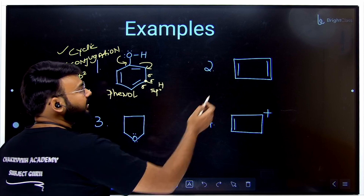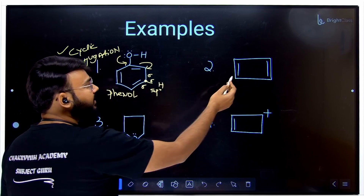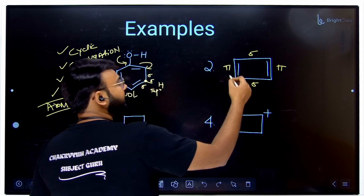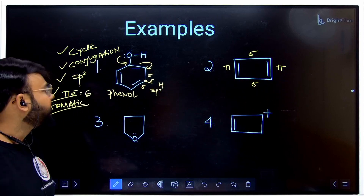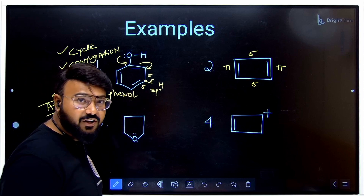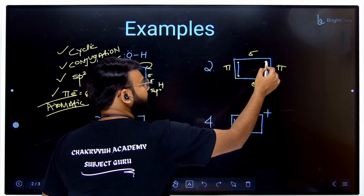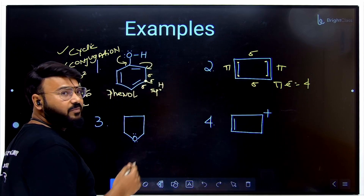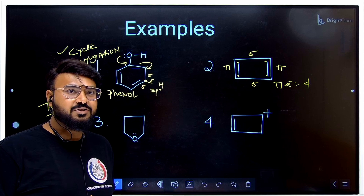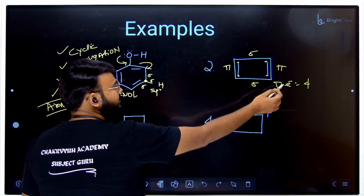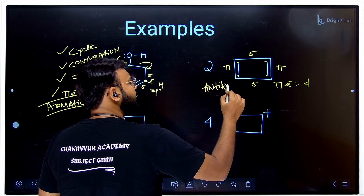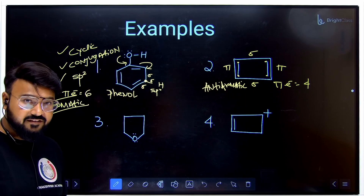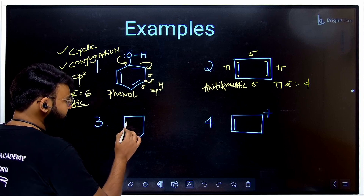The second example also fulfills the first three criteria — it is cyclic, has complete conjugation (pi–sigma–pi throughout), and is sp2 hybridized. However, counting the pi electrons gives 1, 2, 3, 4 — four pi electrons. Four is a multiple of 4 and fits the formula 4n (n=1), so this compound is anti-aromatic.